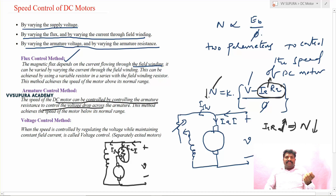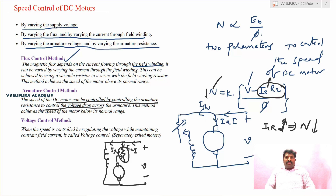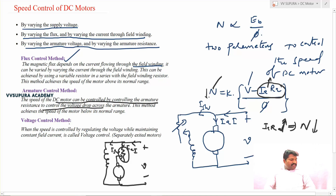In the flux control method we obtain above-rated speeds from the normal level; from the armature control method we obtain below-rated speeds from the normal level. For example, if 1500 rpm is the normal speed — to increase speed, use flux control method; to reduce speed below rated, use the armature control method. Apart from these two methods, there is another method: the voltage control method.